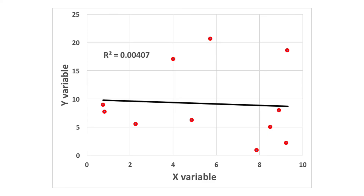Here's a scatter plot where the regression model explains almost none of the variation in the dependent variable. The r squared is less than 0.01 — it's actually 0.00407. So this picture is characterized by very, very large residuals, or a very, very large difference between many of the points and the regression line.